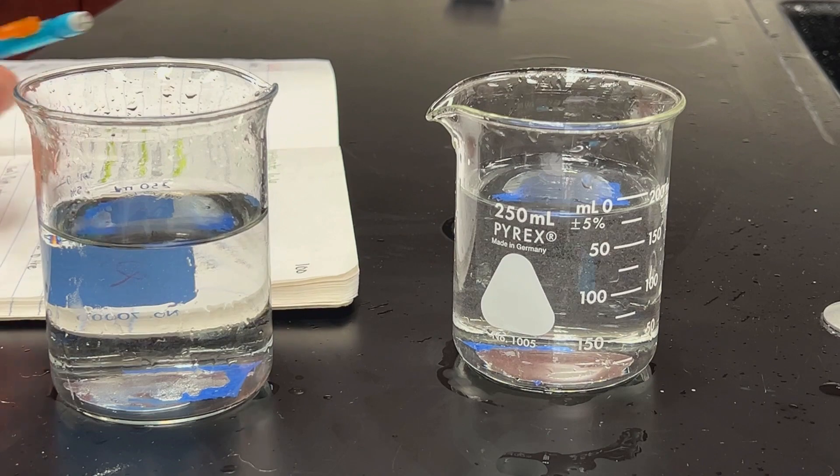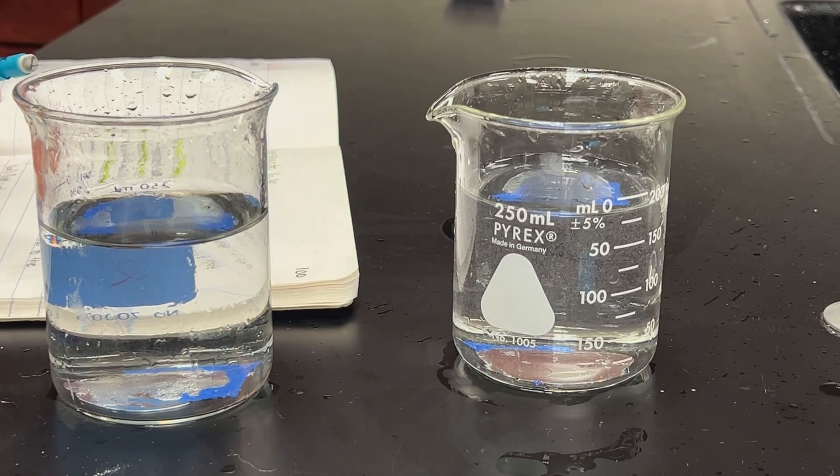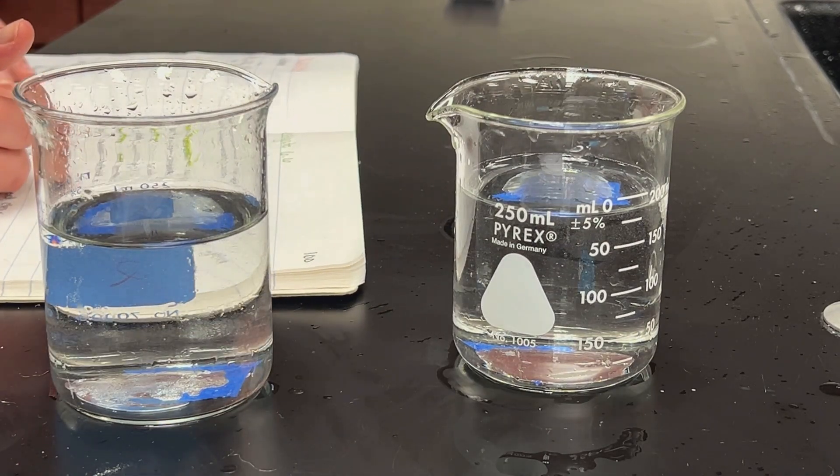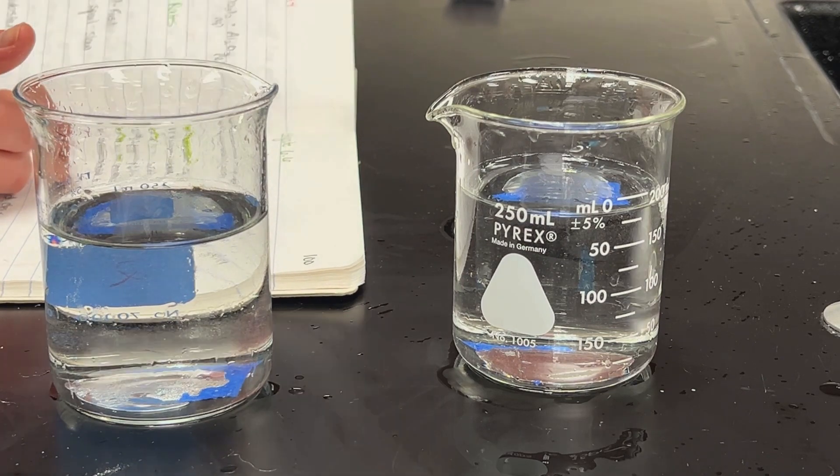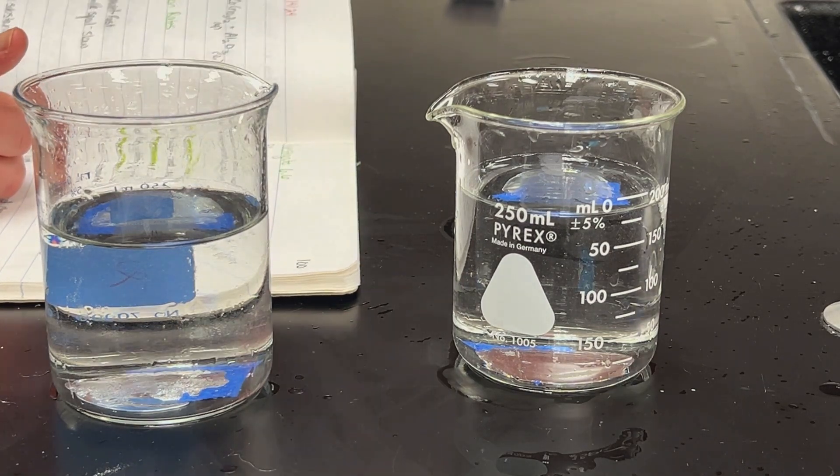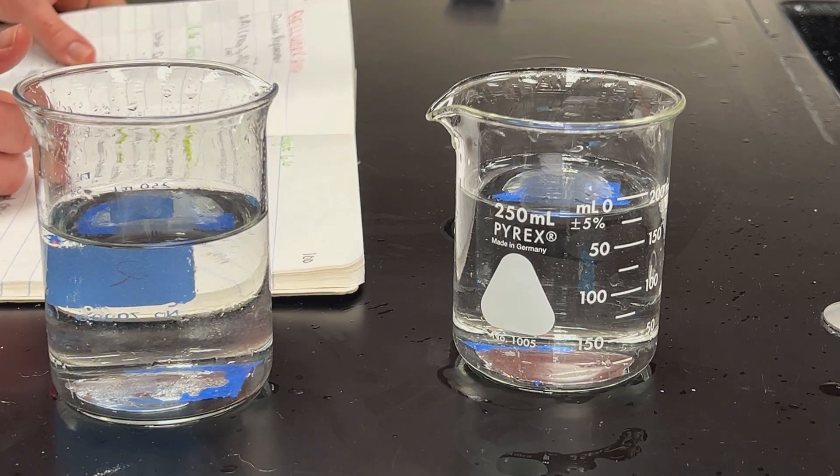Because we're in 7. Wait, is this 7? Okay, number 7. Prepare two beakers each containing equal amounts of 200 milliliters of room temperature water.